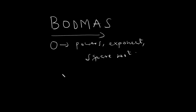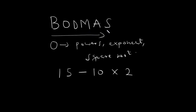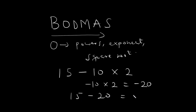Now that we have a fair idea of how BODMAS works, let's return to the previous example and conclude on the answer. The problem was 15 minus 10 times 2. According to BODMAS, multiplication has a higher precedence than subtraction. So negative 10 times 2 is equal to negative 20, and 15 minus 20 is equal to negative 5. So this is the correct answer.